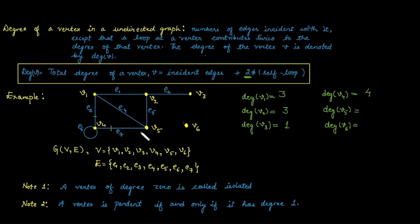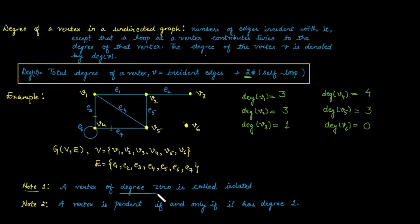Degree of vertex v5: three edges are incident with v5, so degree is three. Degree of v6: no edge is incident with v6, so its degree is zero. When the degree of a vertex is zero, that vertex is called an isolated vertex. So in this graph, v6 with degree zero is called an isolated vertex.